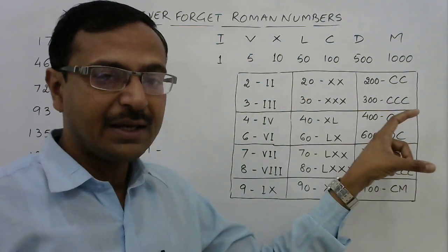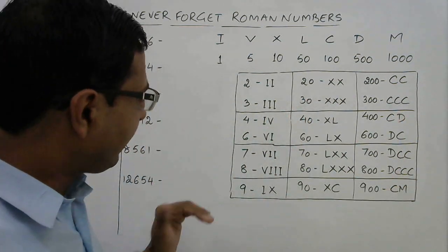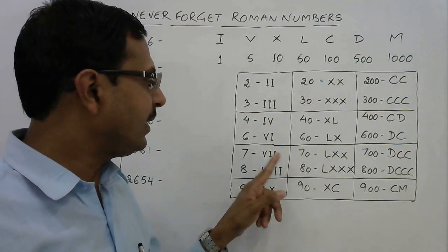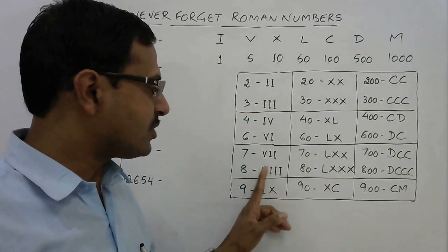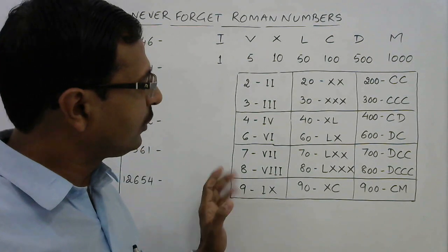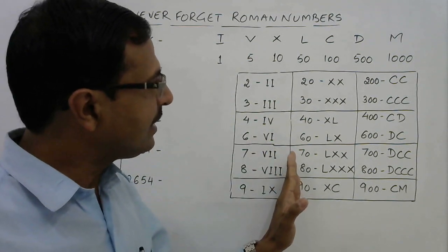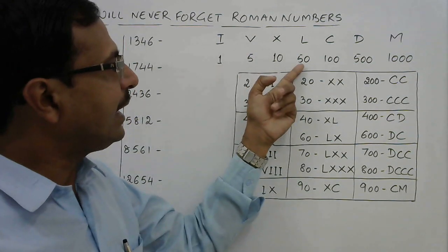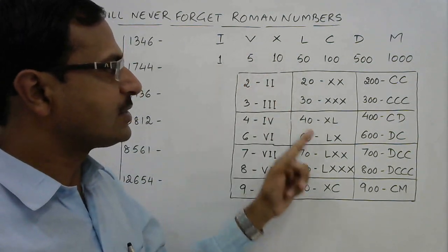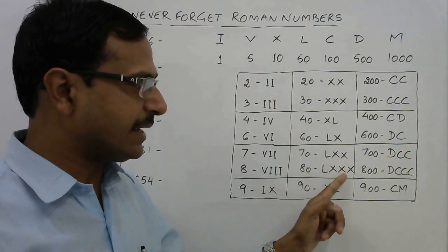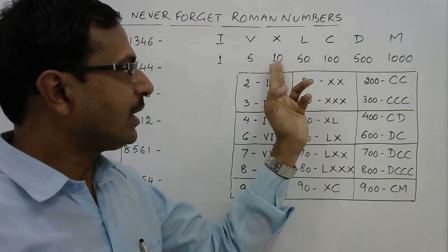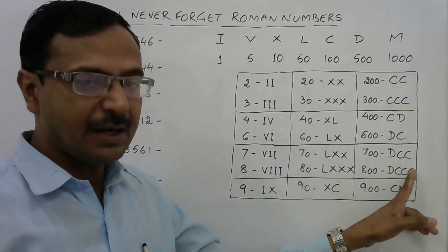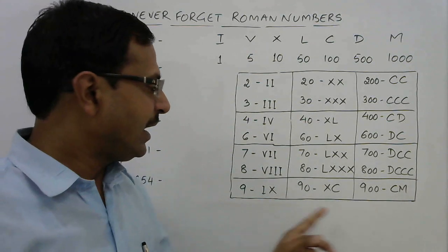For 7 and 8: 7 is VII (V plus three I's) and 8 is VIII. Scaling up, 70 is LXX and 80 is LXXX. Moving to hundreds, 700 is DCC and 800 is DCCC.